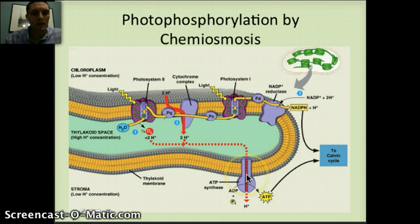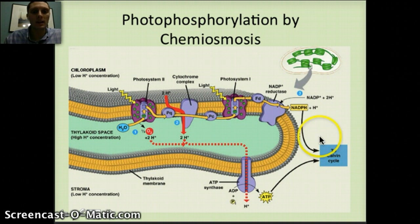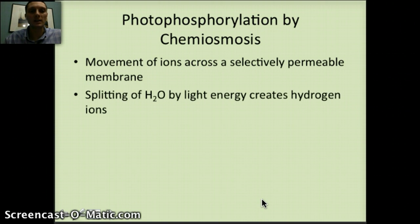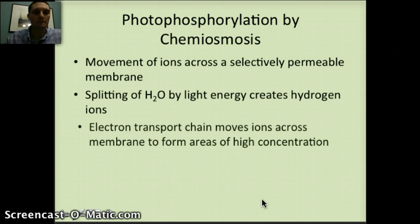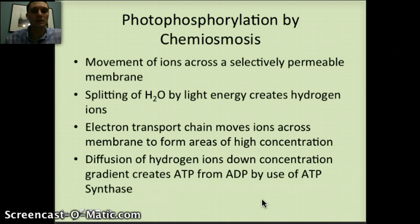The enzyme ATP synthase in the membrane allows hydrogen ions to move across the membrane. As they move across, it forces the ATP synthase to turn, providing the energy to combine ADP with a phosphate group, creating ATP. The NADPH and ATP can then be used in the Calvin cycle. To summarize: H2O is split by light energy to create hydrogen ions; the electron transport chain moves ions across the membrane from high to low concentration; and the diffusion of hydrogen ions down the concentration gradient creates ATP from ADP using the enzyme ATP synthase.